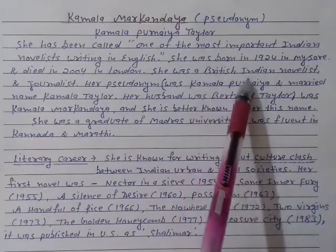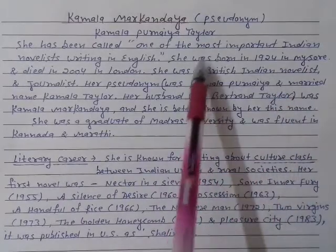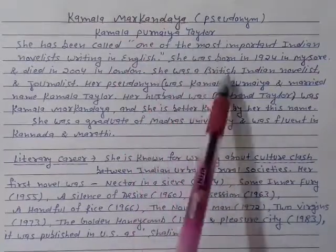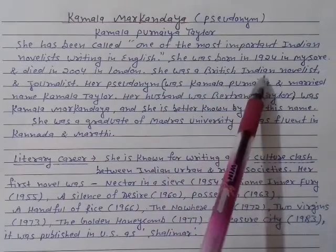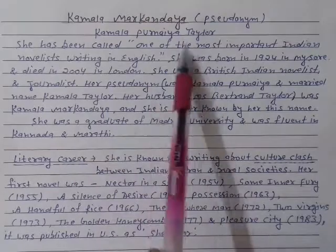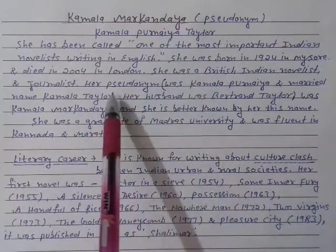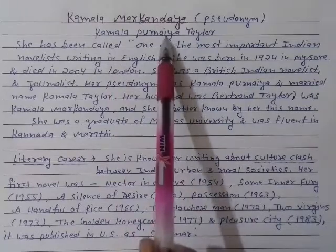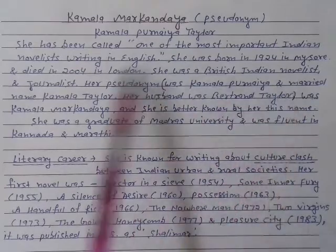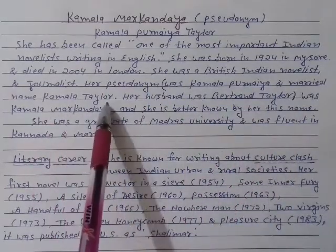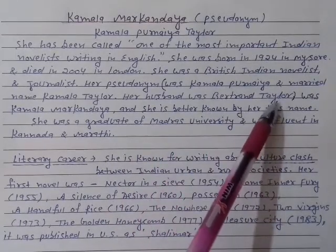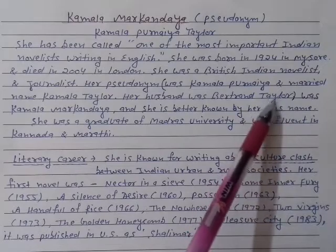Kamala Markandaya was a British-Indian novelist, which is why she has also been called Kamala Taylor. She was a British-Indian novelist and a journalist. Her pseudonym was Kamala Markandaya and her real name was Kamala Purnia. She later married and took the surname Taylor — her husband was Battered Taylor — and that is how she got this surname.